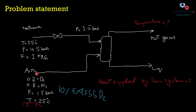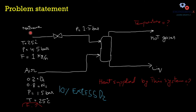For the air stream, we also have to consider that 10% oxygen is in excess. The other two parameters we need to find are the temperature of the hot gases, and the heat available from 1 kg per hour of methane when it is completely burned in the combustor.